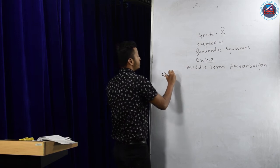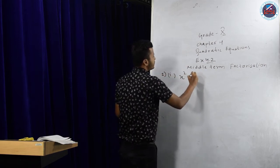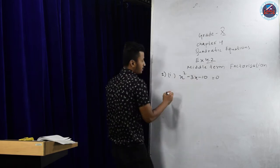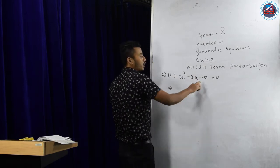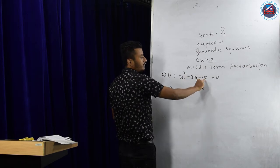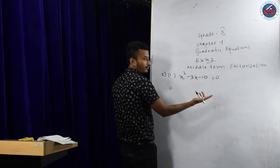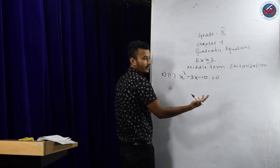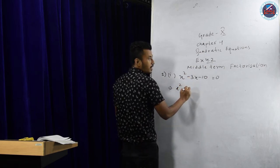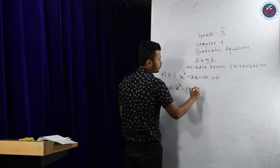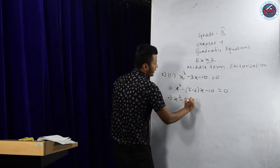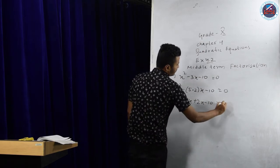Question number 1, part 1: x² minus 3x minus 10 equals to zero. In middle term factorization, first you multiply a and c. Here a is 1 and c is minus 10, so 1 into 10 gives 10. Then find the prime factorization, and then group. So this becomes x² — how will I get 3? I can write 3 as 5 minus 2 — so x² minus 5x plus 2x minus 10 equals to zero.